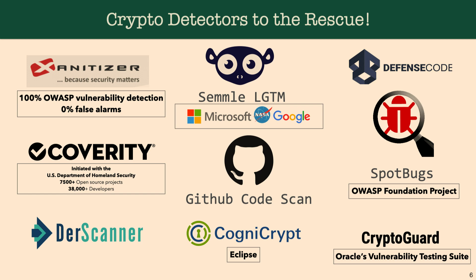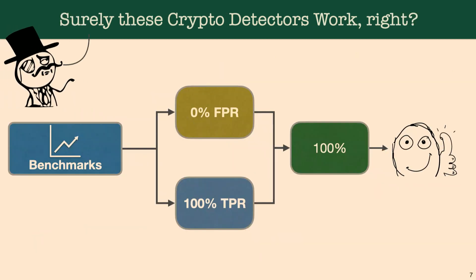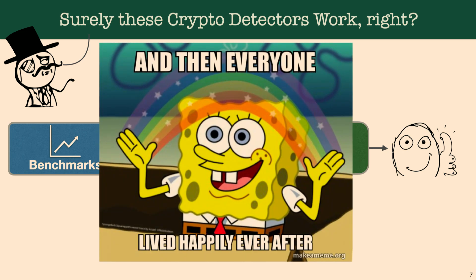Thankfully we have cryptographic API misuse detectors, or in short, cryptodetectors, to the rescue. For example, one tool is in active use by at least 38,000 open source developers. And surely they work, because we have benchmarks — so if a cryptodetector says it has 0% false positive rate and 100% true positive rate against these benchmarks, that's good, so we can all live happily ever after.